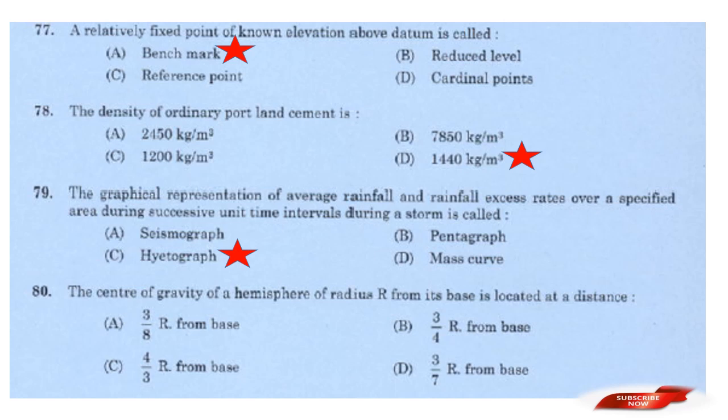Question: The centre of gravity of a hemisphere of radius r from its base is located at a distance of? Options: 3r/8 from base; 3r/4 from base; 4r/3 from base; 3r/7 from base. Answer: Option A — 3r/8 from base.